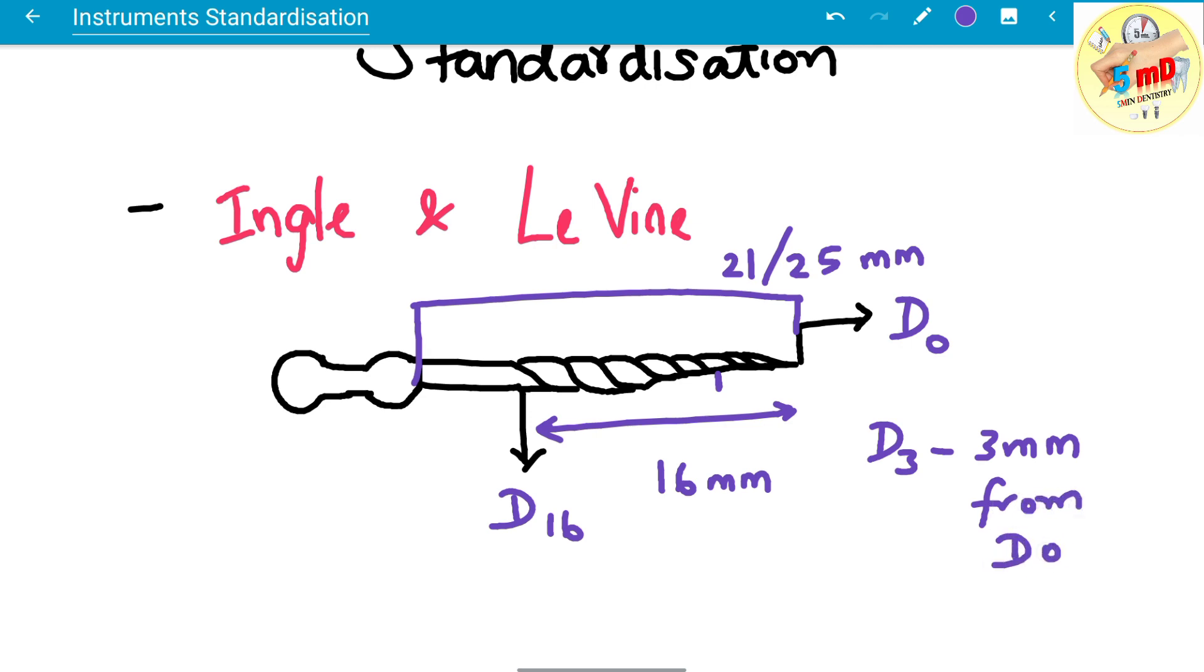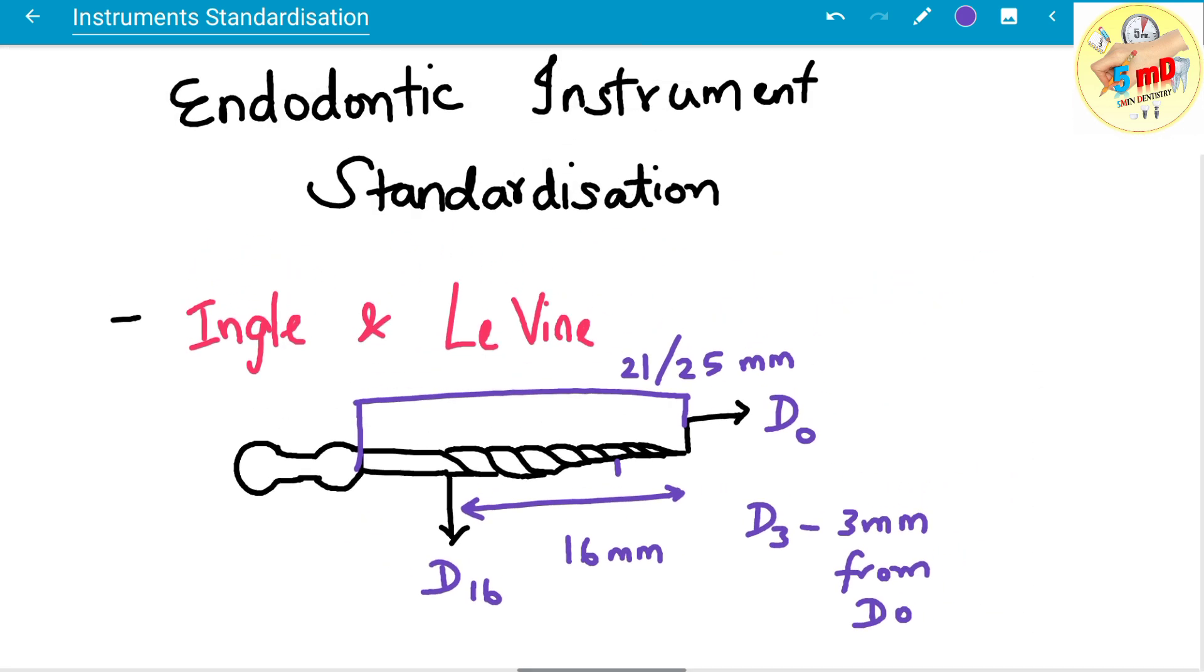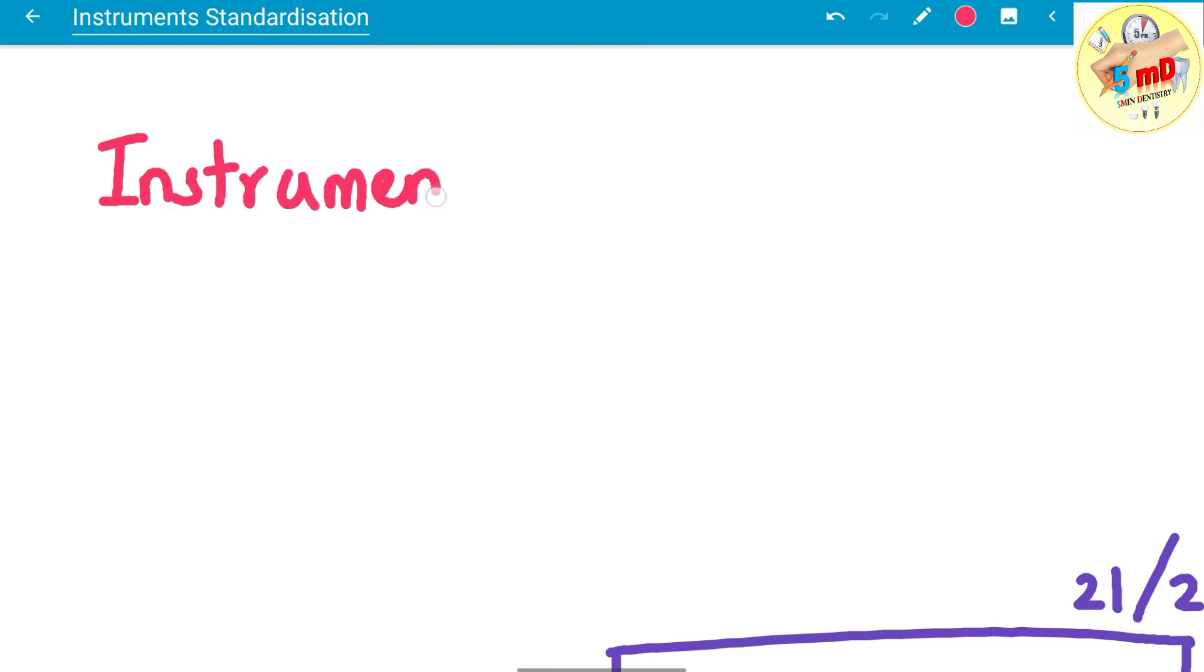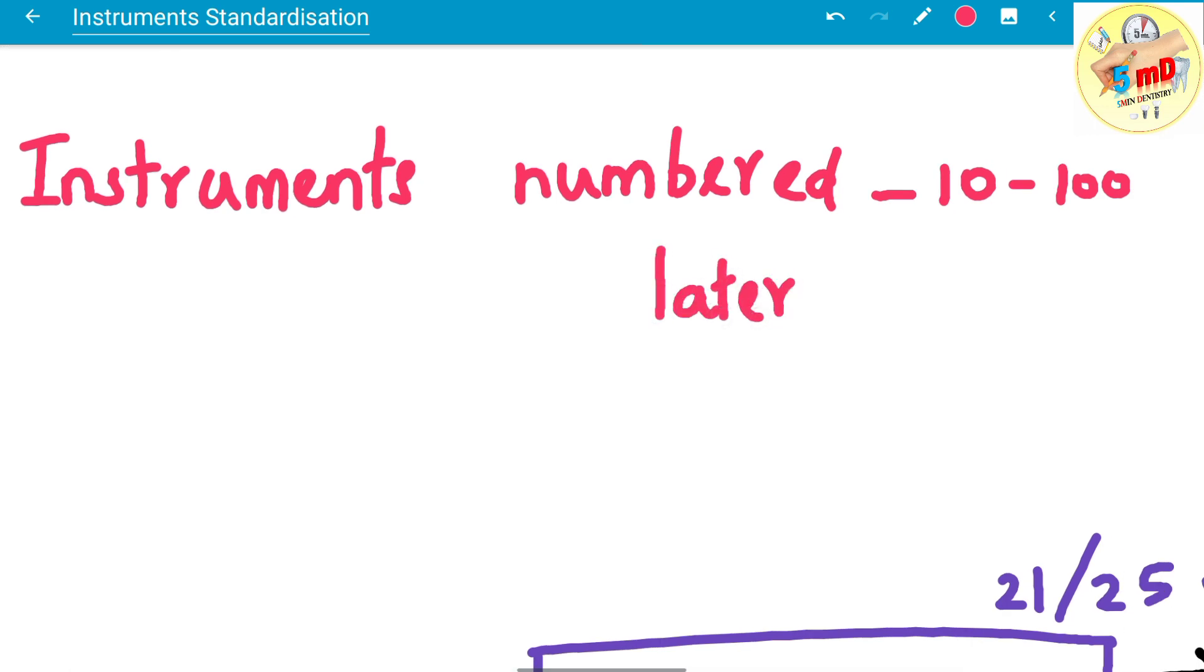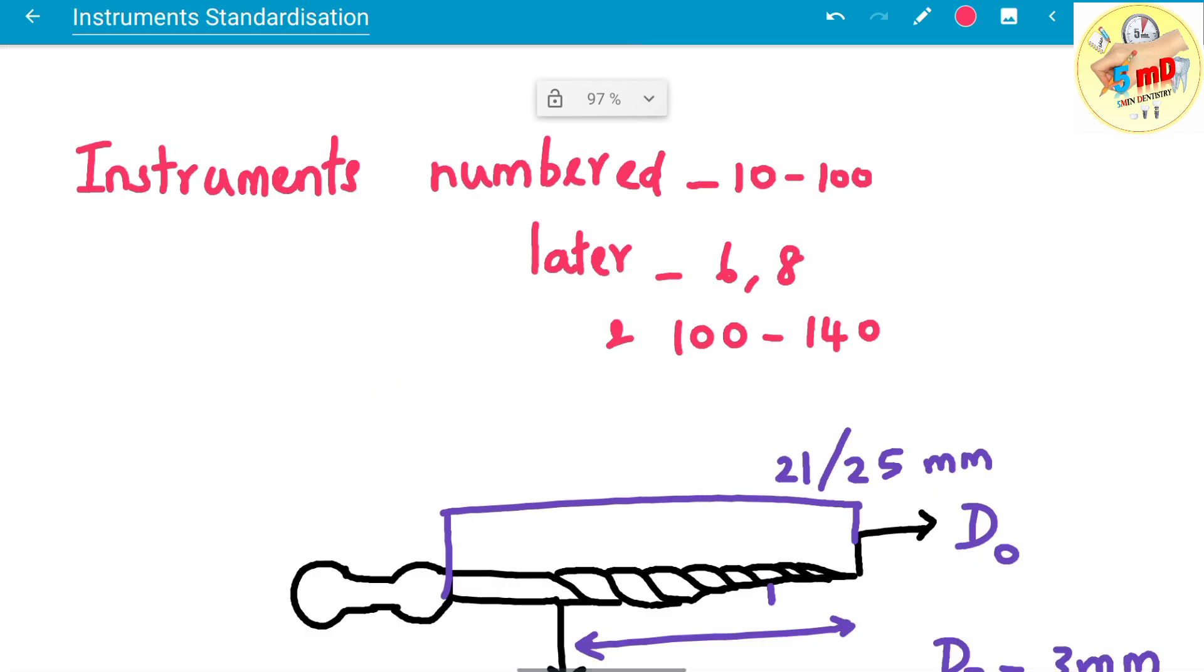d3 is the space 3 mm from d0. Initially, Ingle and Levine gave only d0 and d16, and the instruments are numbered usually from 10 to 100. Later, 6 and 8 were added, and apart from 100, up to 140 were added.